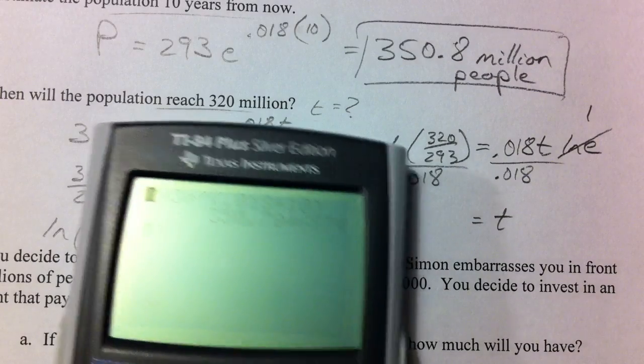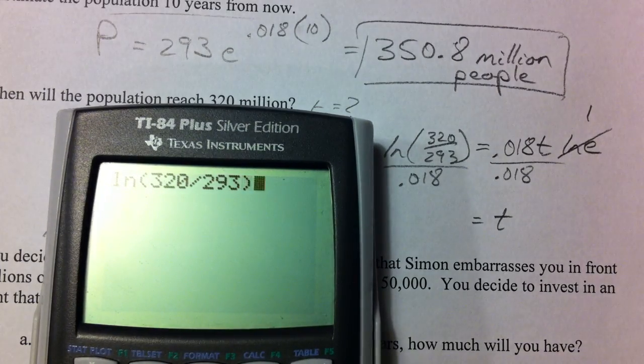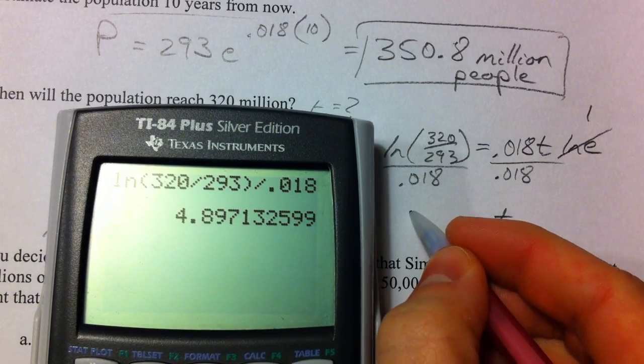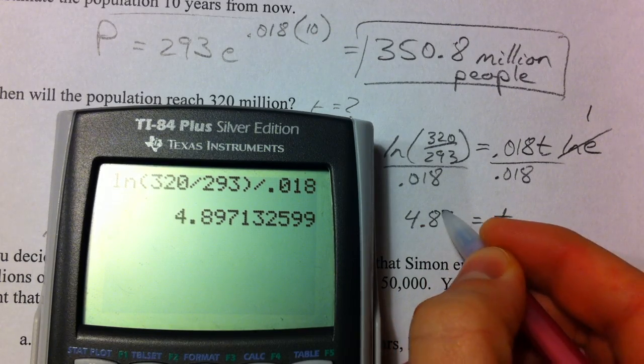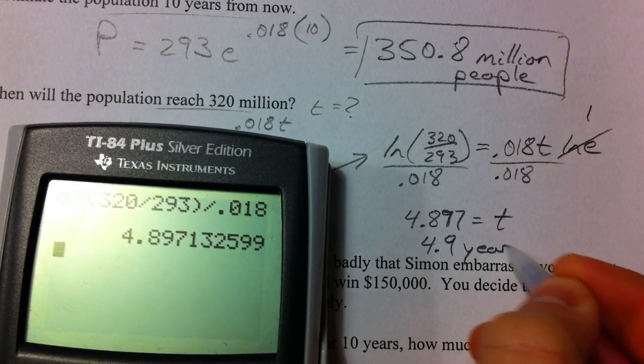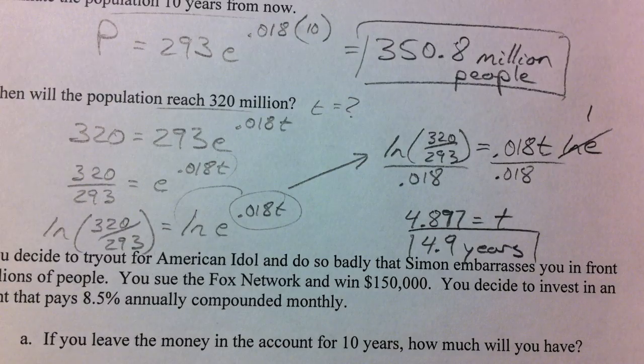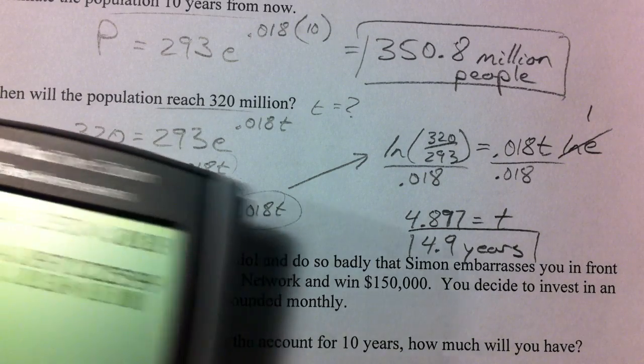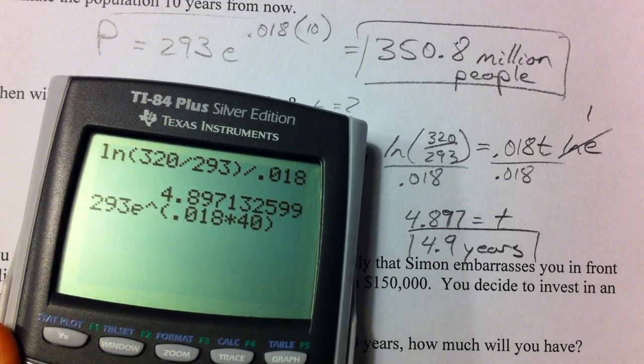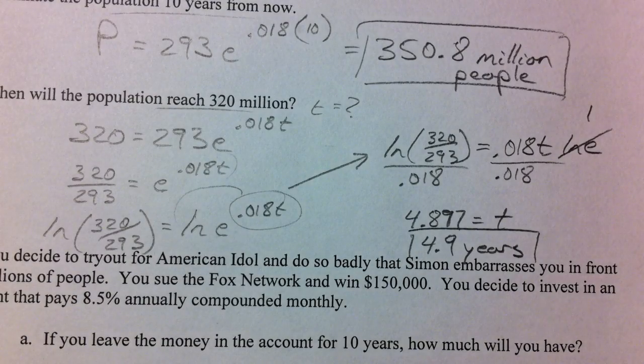To solve for T you divide by 0.018 and we should get a number because it's less than 10 because we saw that if we actually calculate it 10 years from now we were above our goal here. So 4.897, in 4.9 years we're going to hit 320 million. You could go back and we had typed it in here before and change this 10 to 4.9 years if you want or 4.897 and sure enough we're going to hit 320 with some rounding error.